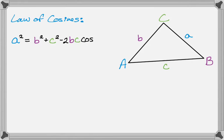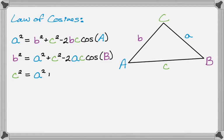So the law of cosines tells us that in this triangle, a squared is b squared plus c squared minus 2bc cosine of A. It also tells us b squared is a squared plus c squared minus 2ac cosine B. And it also tells us that c squared is a squared plus b squared minus 2ab cosine C.